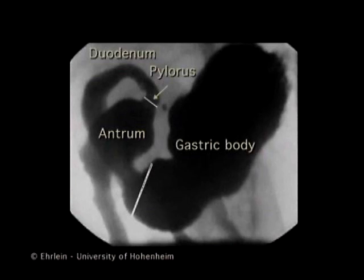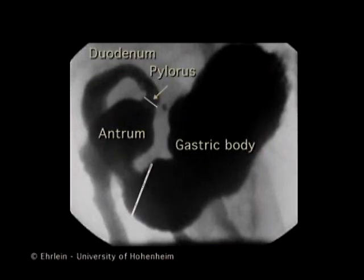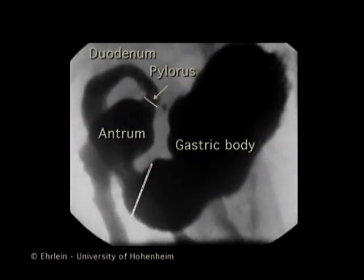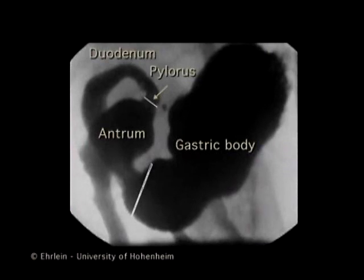Here you see the fluoroscopic picture of the canine stomach. The stomach can be divided into the gastric body and the antrum. The location of the pylorus and the duodenum are also indicated. The peristaltic waves of the antrum represent the gastric pump.